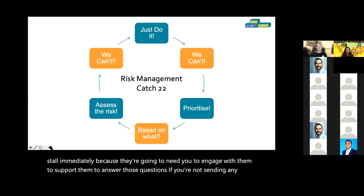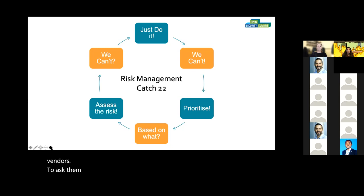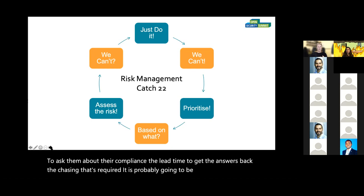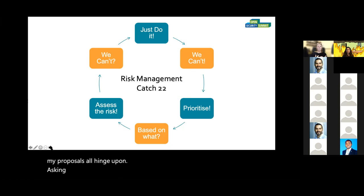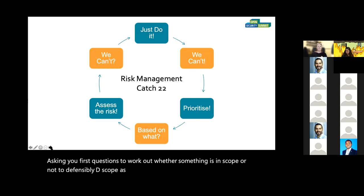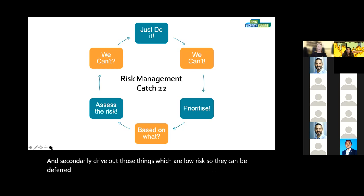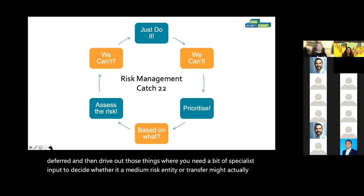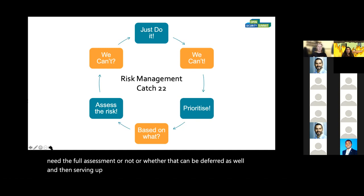If you're just sending questionnaires to vendors to ask about their compliance, the lead time to get answers back and the chasing required is probably going to be prohibitively long. So my proposals all hinge upon asking your first questions to work out whether something is in scope or not — to defensively de-scope as an absolute priority. Just get rid of the things where none of this effort is needed. And secondarily, drive out those things which are low risk so they can be deferred, and then drive out those things where you need specialist input to decide whether a median risk transfer needs the full assessment or can be deferred.